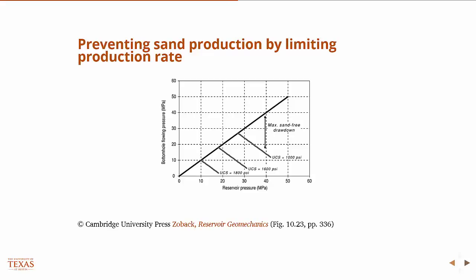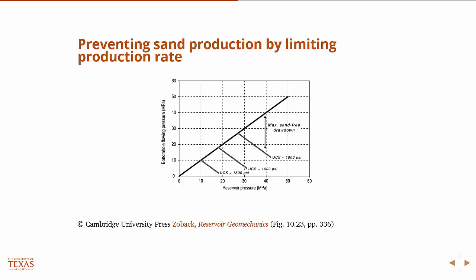One way to prevent sand production is by limiting the production rate. Over here you have the bottom hole flowing pressure versus reservoir pressure or pore pressure. And the difference between these two is the drawdown.